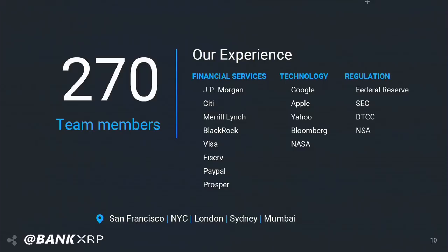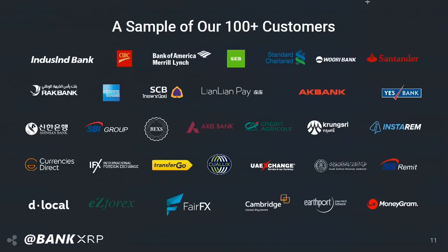At Ripple right now, we have 270 team members — two-thirds of them engineers — with experience across many industries. We're headquartered in San Francisco in the financial district, with offices in London, New York, Mumbai, and Sydney. We've been in business since 2012 and work with a vast array of customers, including major financial institutions, payment providers, and corporates, to move money globally.